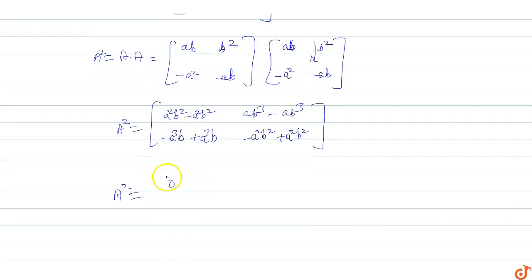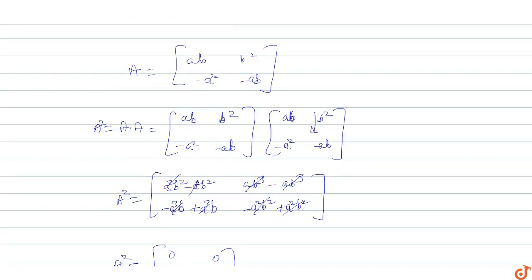So this is zero. If you cancel out: a²b² minus a²b² cancels out, ab³ minus ab³ cancels out, -a³b plus a³b cancels, so this equals [[0, 0], [0, 0]]. A² equals the zero matrix.